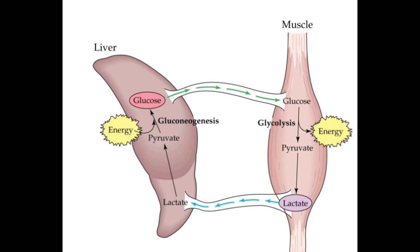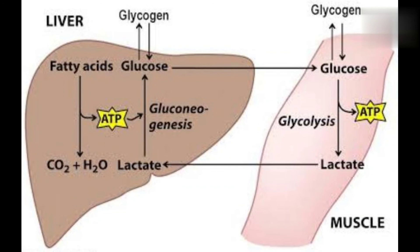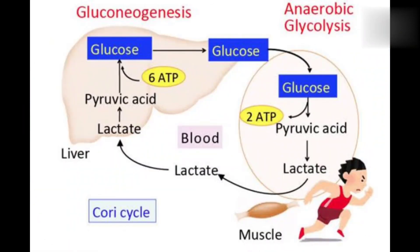We have glucose in our liver. That glucose travels through the bloodstream, and then lactate is converted back to glucose via pyruvate, releasing energy. This allows us to continue muscular activity. Due to limited oxygen availability, we have anaerobic glycolysis, which produces lactate, and that lactate is converted in the liver where pyruvate is converted to glucose.